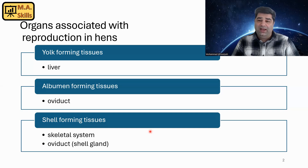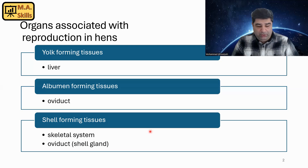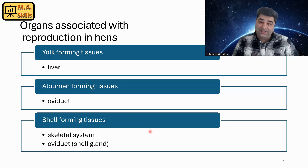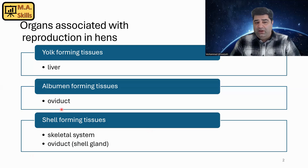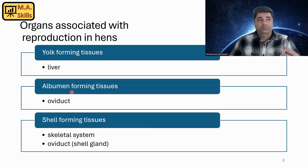The liver is part of the digestive system and part of the gut, and that's why gut health is really important for successful production. In future videos I'm going to talk about gut health more in depth. We also have the oviduct, which produces albumen.